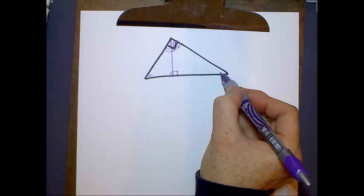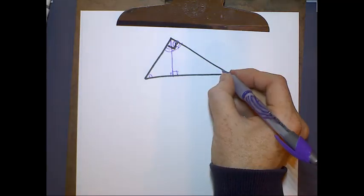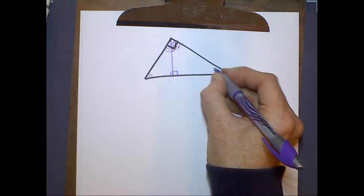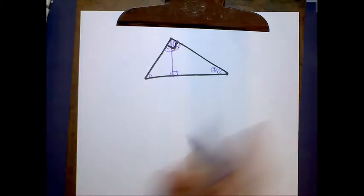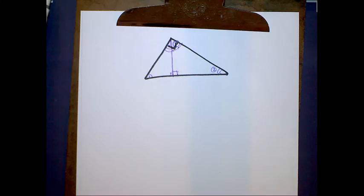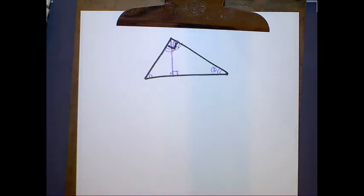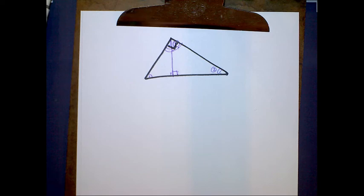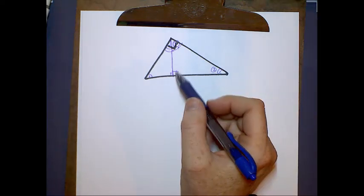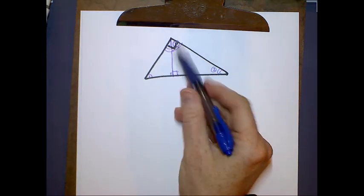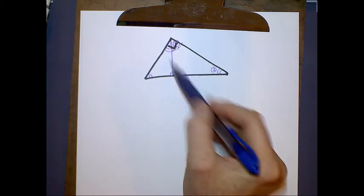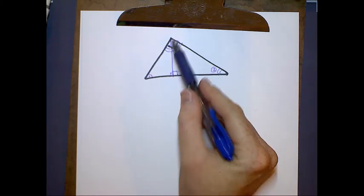And these two are also complementary, so this one happens to also be angle number two. So here we have a whole bunch of different angles that are the same. And as we know, all we need are two angles to be the same in order to say that two triangles are similar. So this triangle over here is similar to this triangle is also similar to the big triangle.